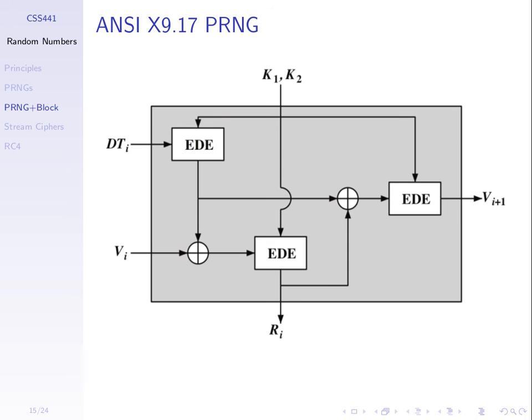To summarize pseudo-random number generators: we have dedicated algorithms — LCG and BBS were two examples — and we can also use existing block ciphers to generate pseudo-random numbers.